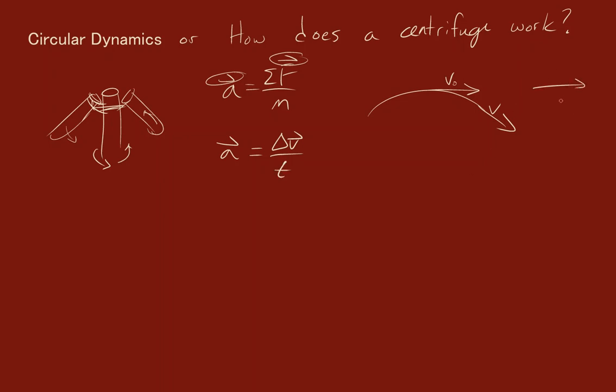So if we subtract v from v naught we will get a delta v that is inward. So if our delta v is inward our acceleration is inward and our net force is also inward. So we're going to call both the acceleration and the net force centripetal.